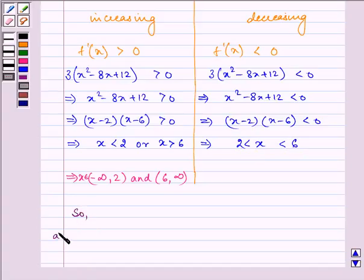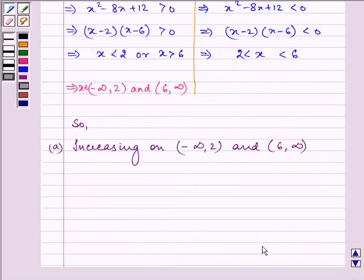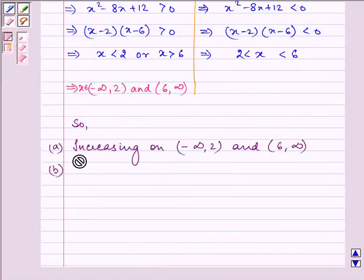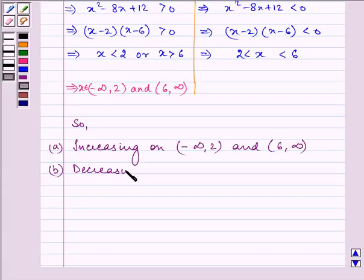So, firstly, this function is increasing on the interval (-∞, 2) and (6, ∞). And (b), it is decreasing on the interval (2, 6).